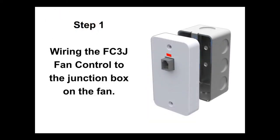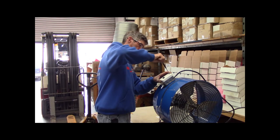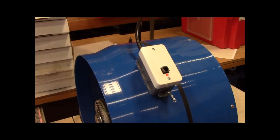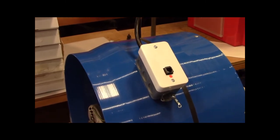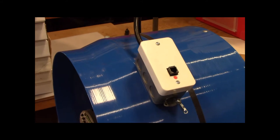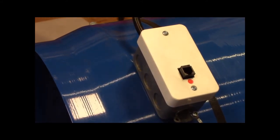Step 1 is wiring the FC3J fan control to the junction box on the whole house fan. This can be done in your shop prior to installing the fan in the attic, saving time in the field. Also, some fan manufacturers supply their fan with an FC3J already installed, making installation even quicker. If your fan has an FC3J installed, you can jump to step 2.